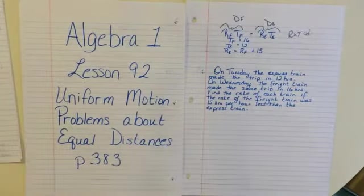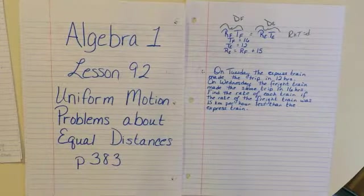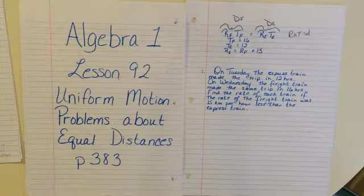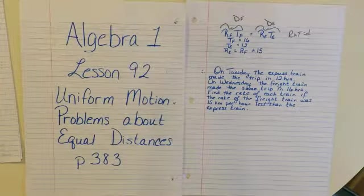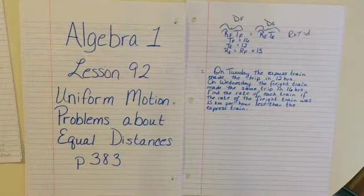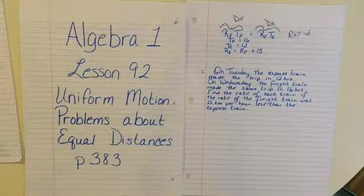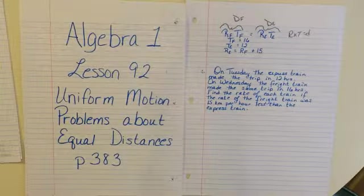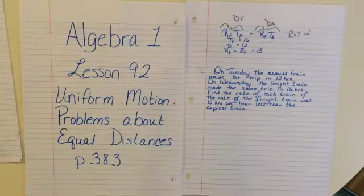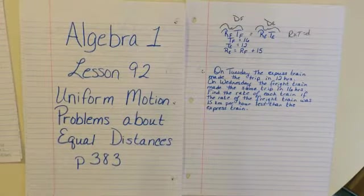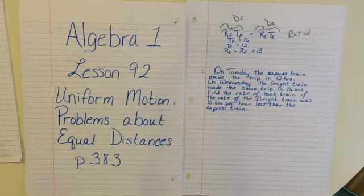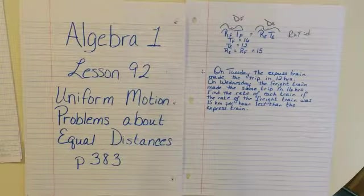In this lesson, we're going to generate the equations from the uniform motion word problems. When we say uniform motion, we mean an object that is moving at a steady speed without slowing down or speeding up — or, more realistically, the average speed of an object over a specific time or distance.